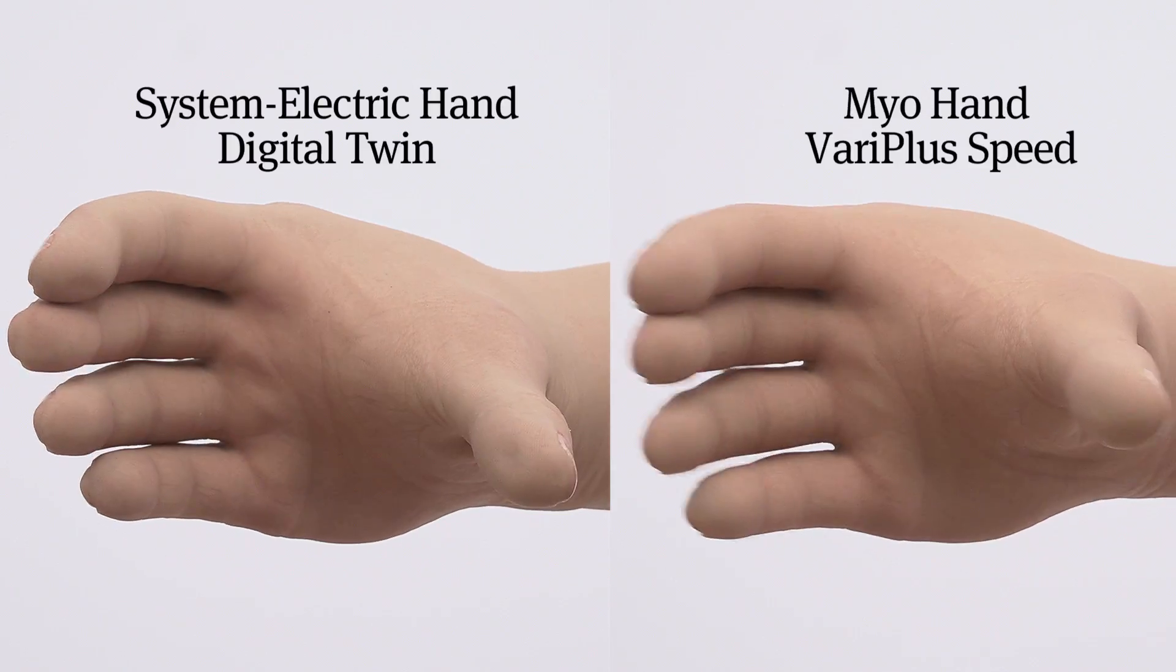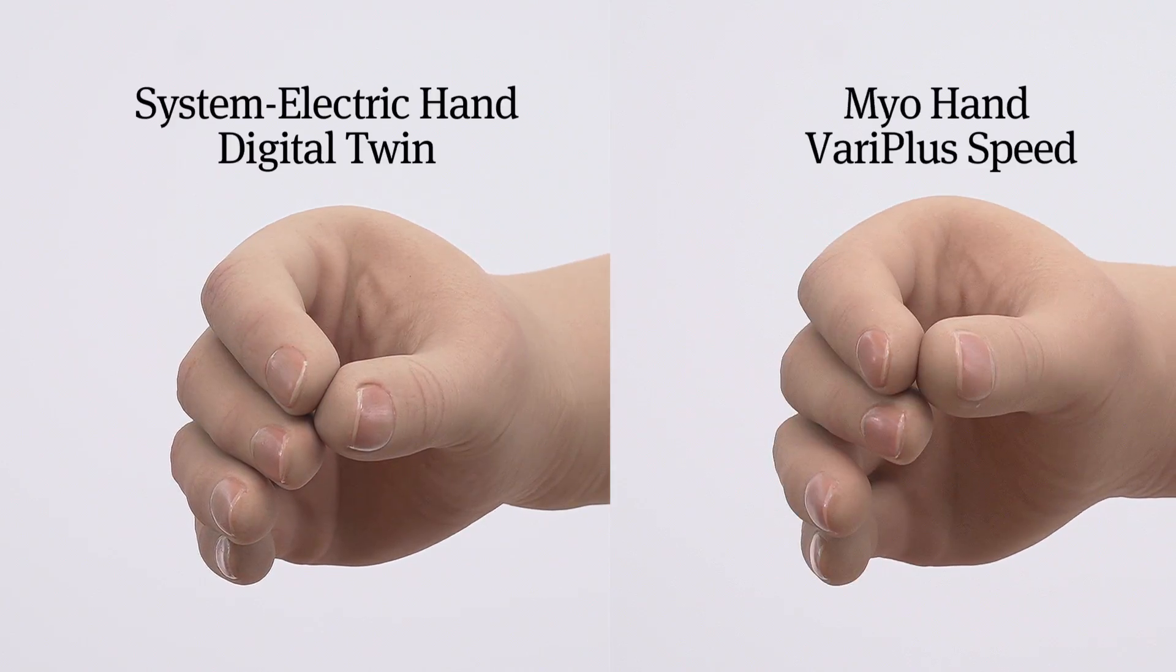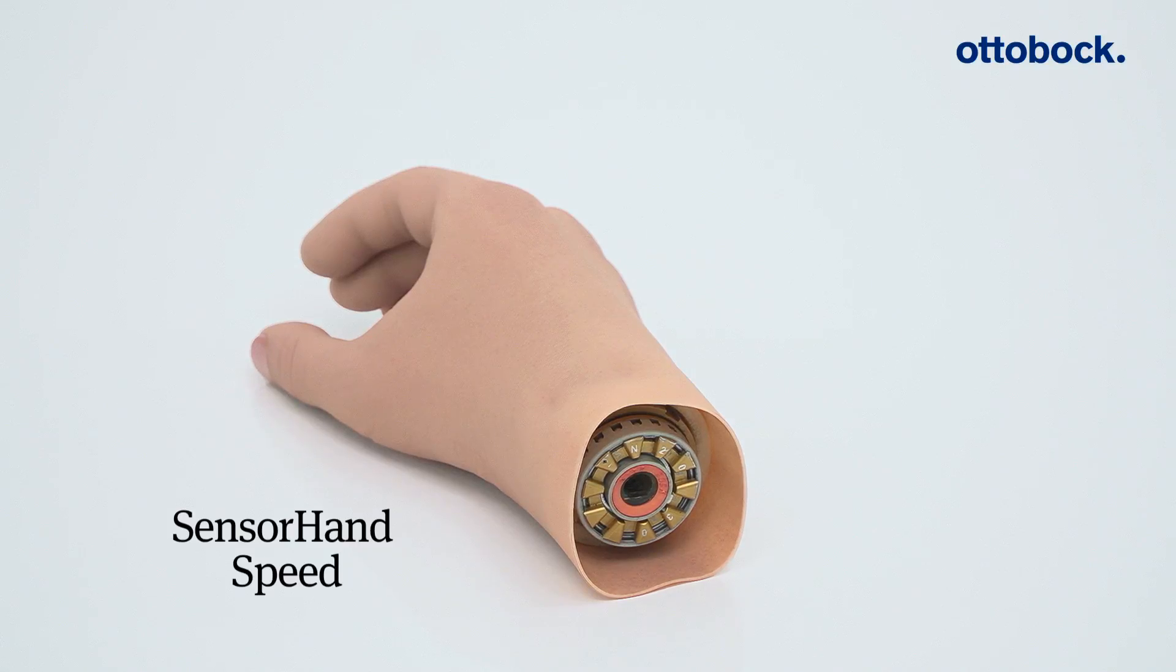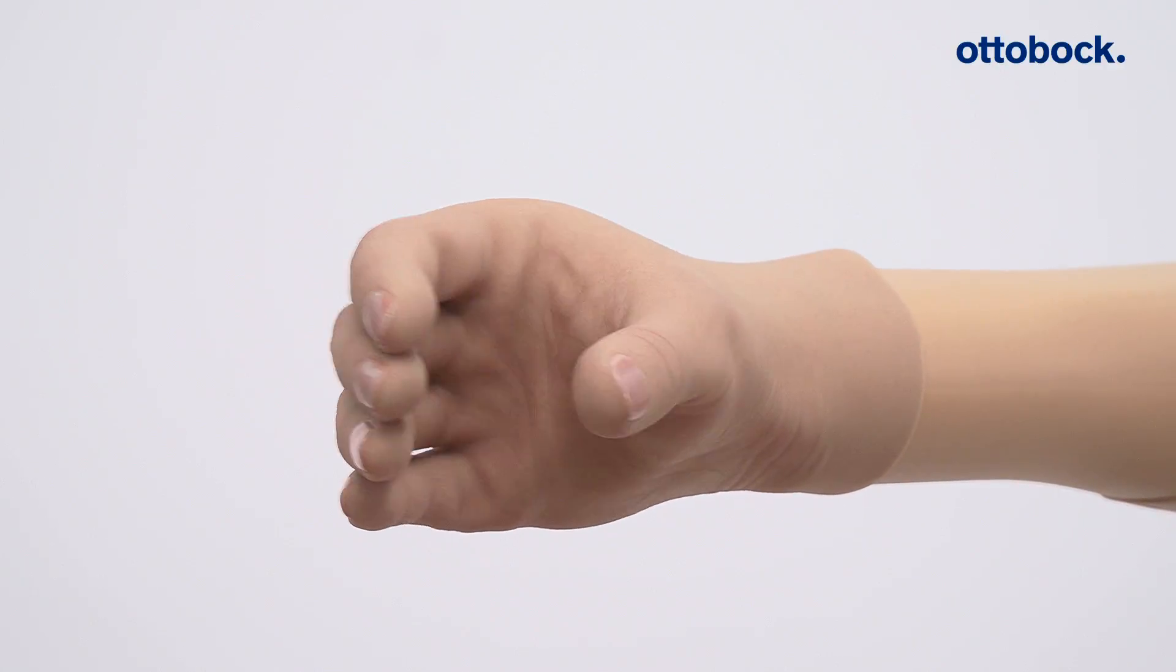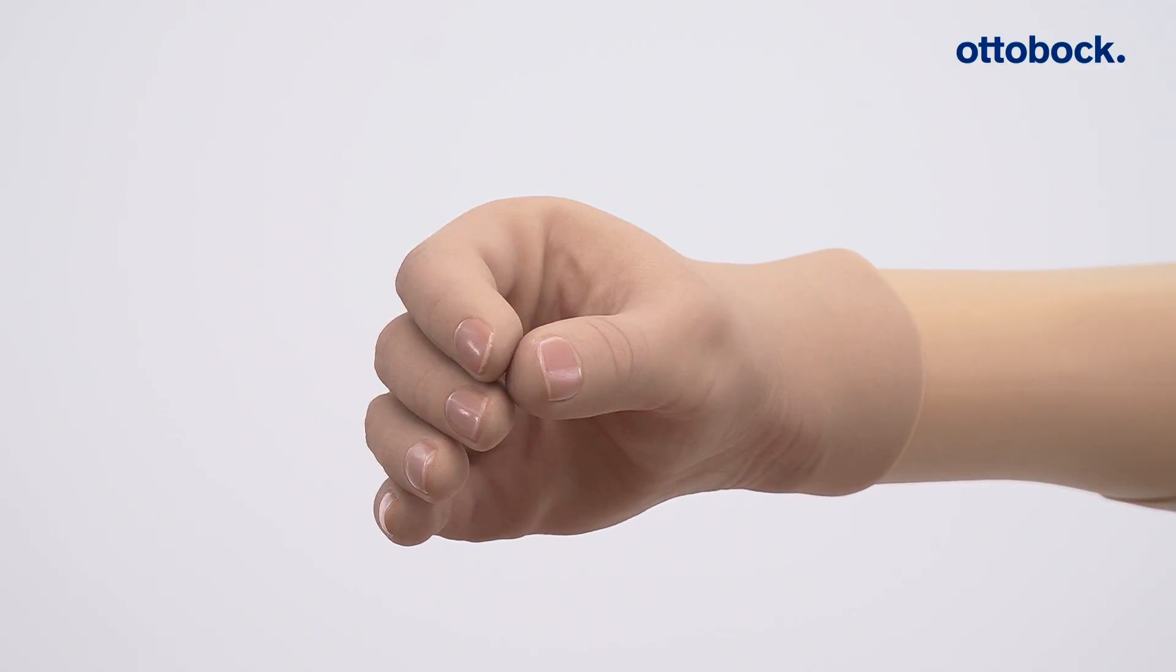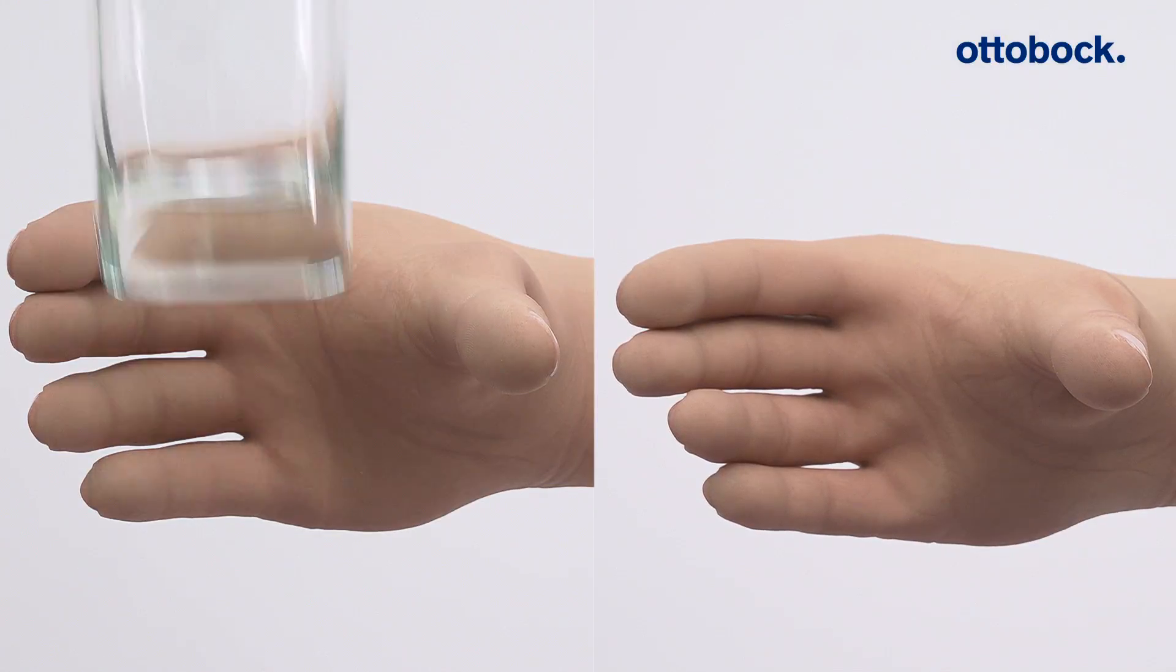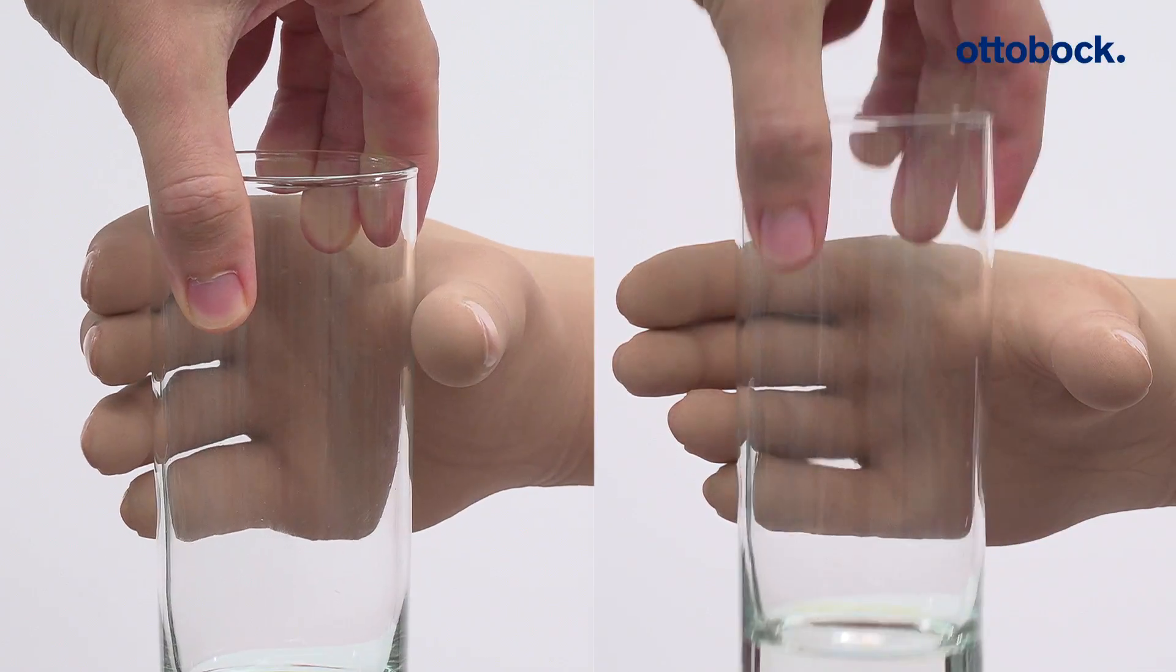The VariPlus Speed hand opens and closes more than twice as fast as other electric hands. The Sensor Hand Speed offers the same functionality as the VariPlus Speed hand. The Suva sensor technology integrated into the thumb instantly senses when a gripped object is about to slip.